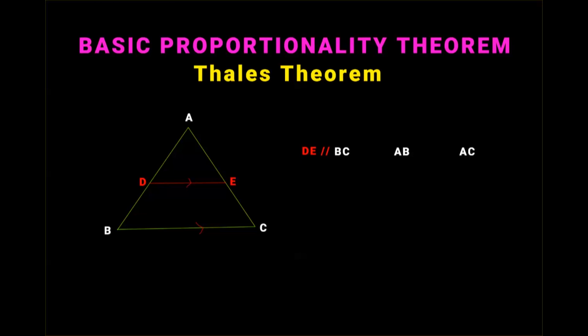According to the Basic Proportionality Theorem, if DE is parallel to BC, or if a line is parallel to one side of a triangle, then the other two sides are divided in the same ratio.